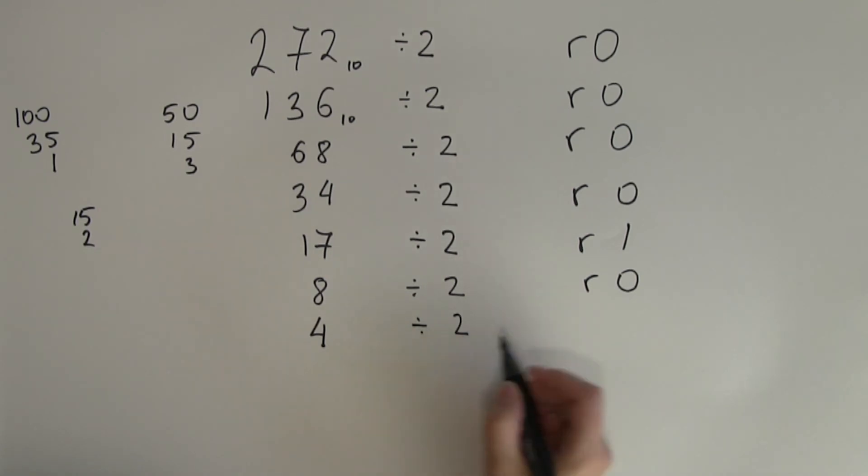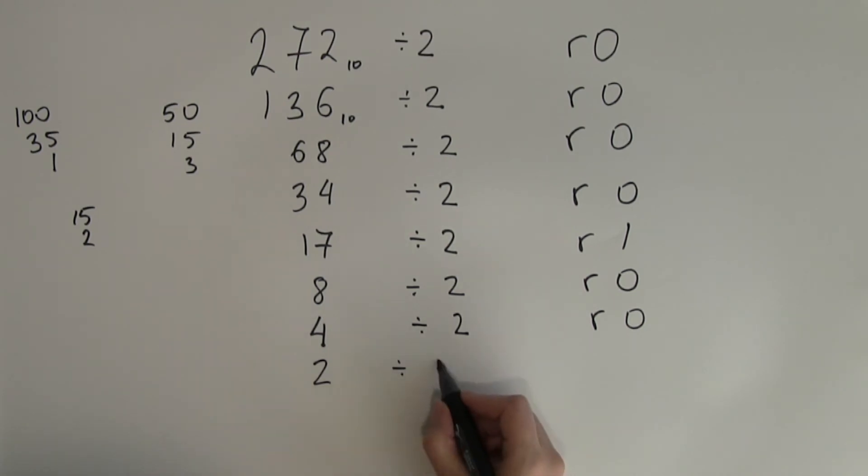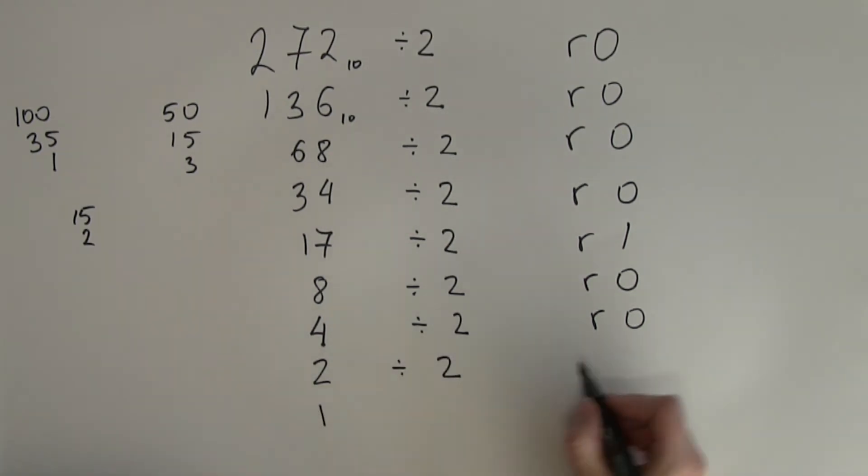4 divided by 2. Remainder will be 0 again. And the answer is 2. 2 divided by 2 is 1. Remainder is 0. And 1 divided by 2 is 0. Remainder of 1.